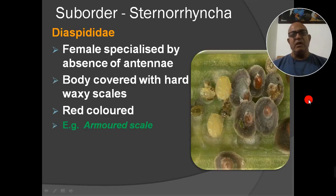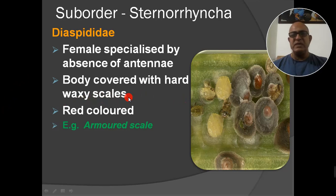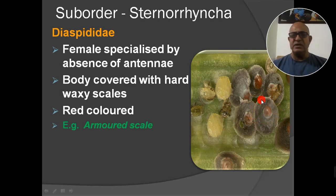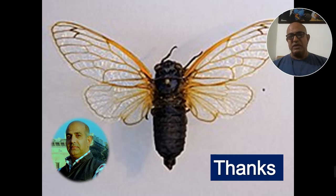Next family: Coccidae/Diaspididae. Females are specialized by absence of antennae. Body is covered with hard waxy scales. They are red colored with an armored structure and red body covering present. This concludes the discussion of Order Homoptera.